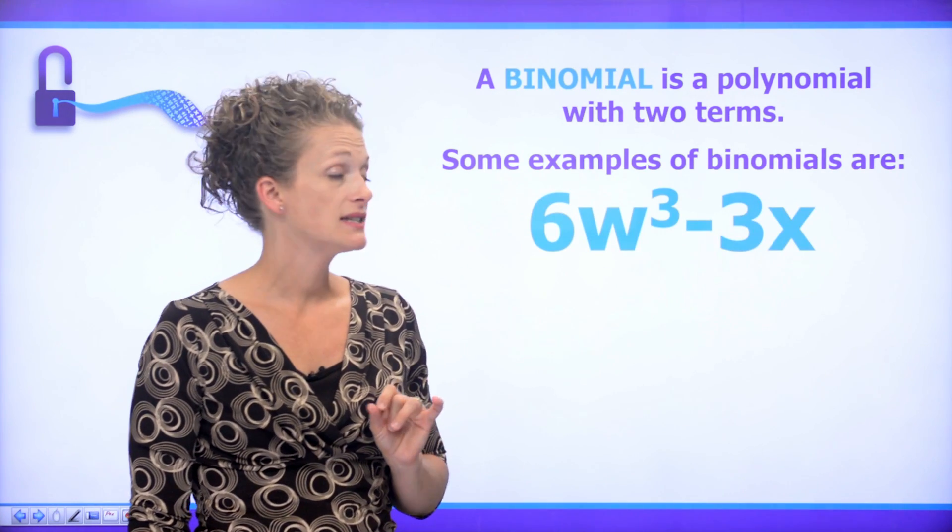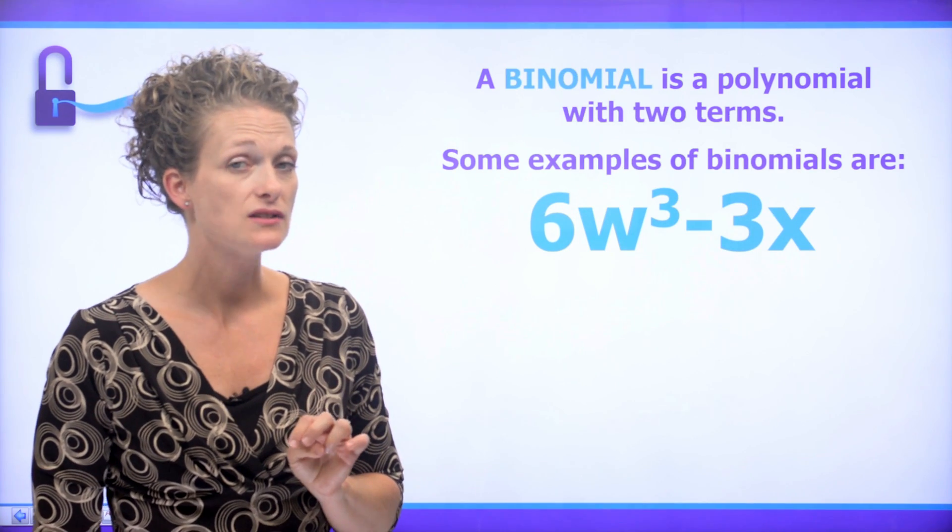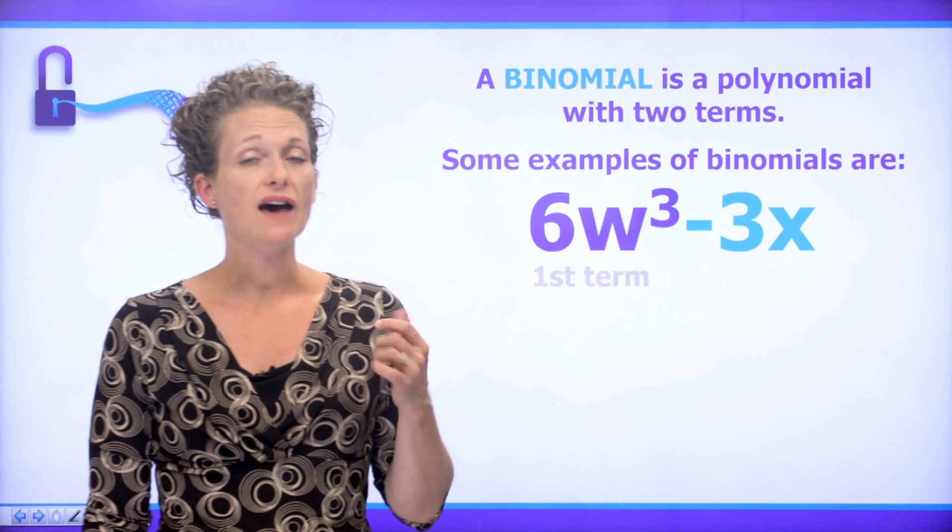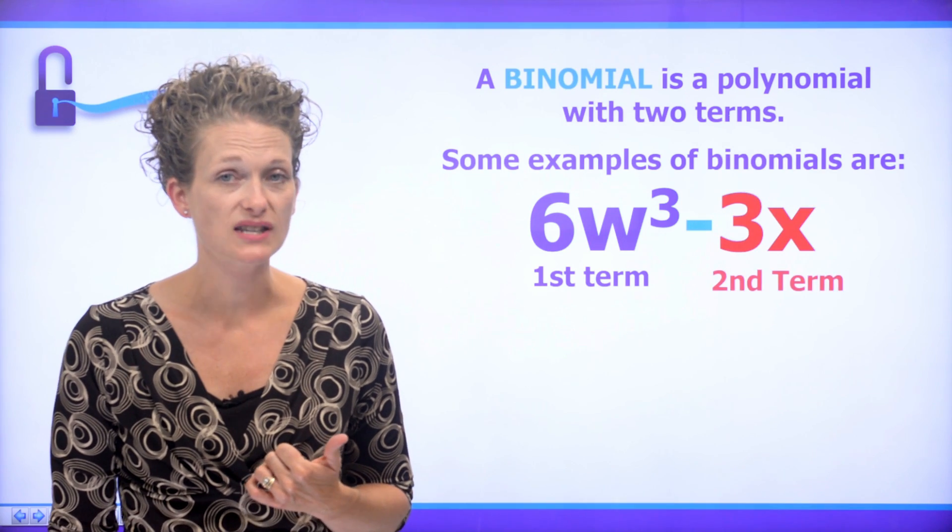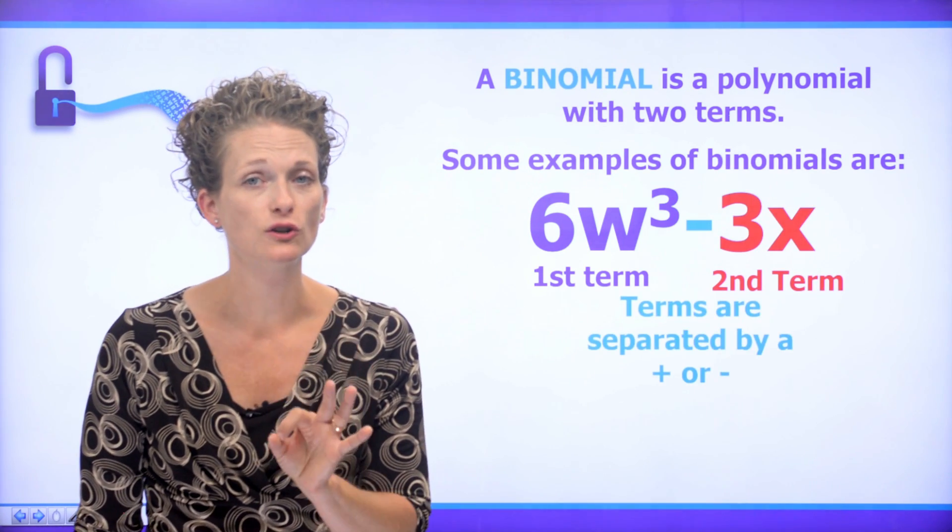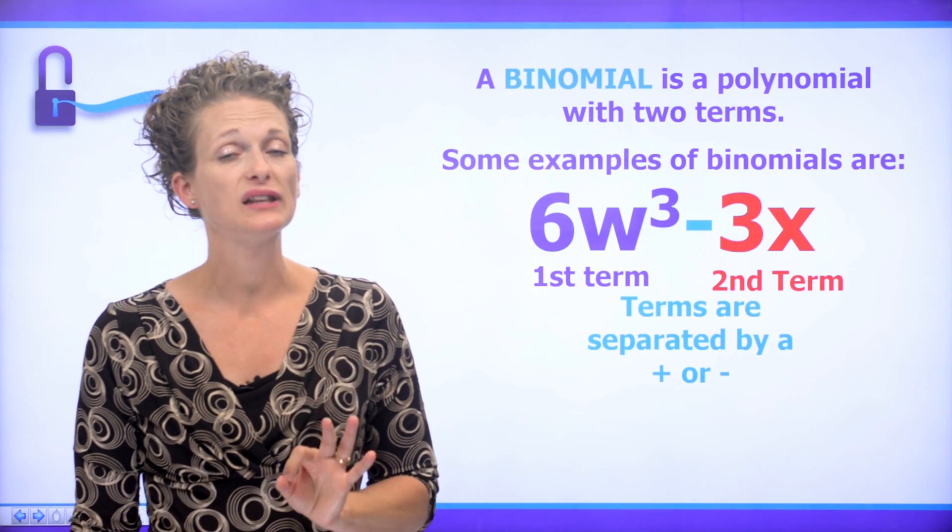When we look at 6w cubed minus 3x, this is also a binomial. We have a first term and we have a second term. Again, we know which are terms because terms are separated by plus or minus.